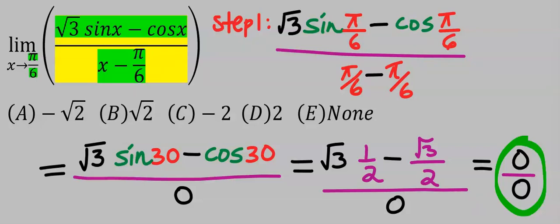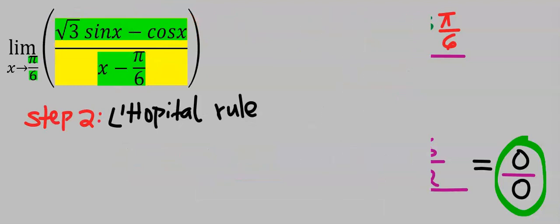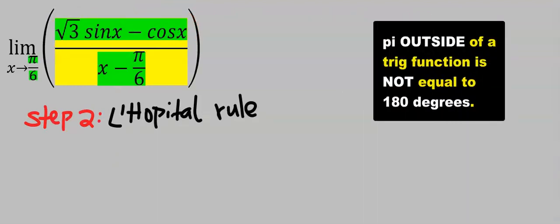For such indeterminate result, we are going to apply step number two, which is L'Hôpital's rule. That is, we are going to differentiate each of these variables separately.